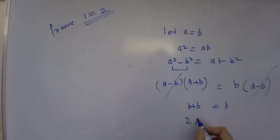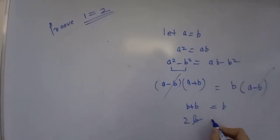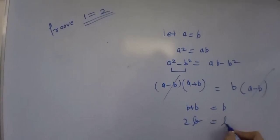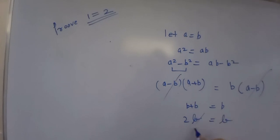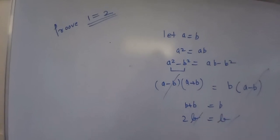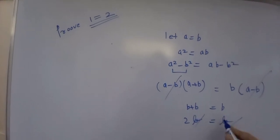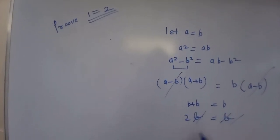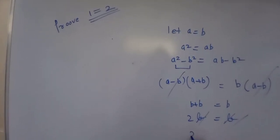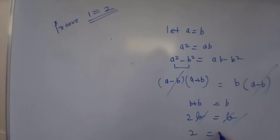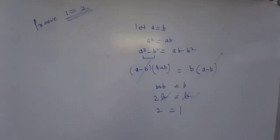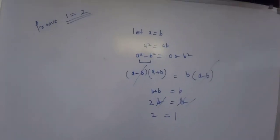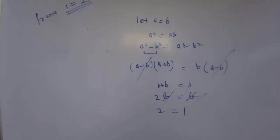Now it's 2b equals b. Cancel b from both sides, so we get 2 equals 1. So this is very easy.